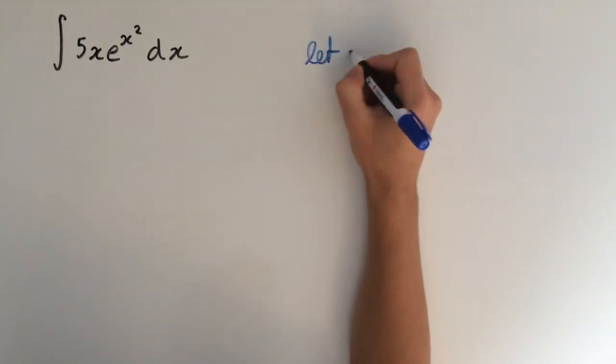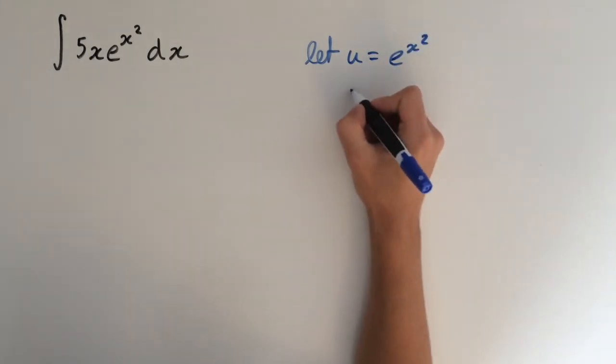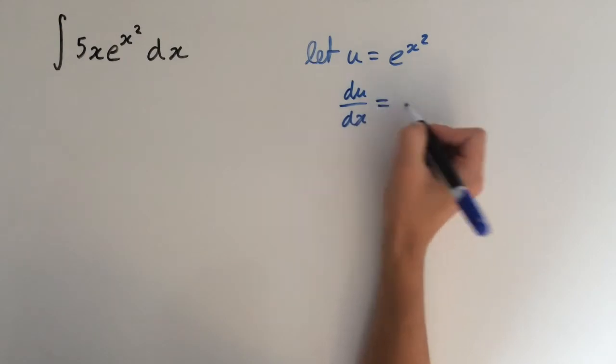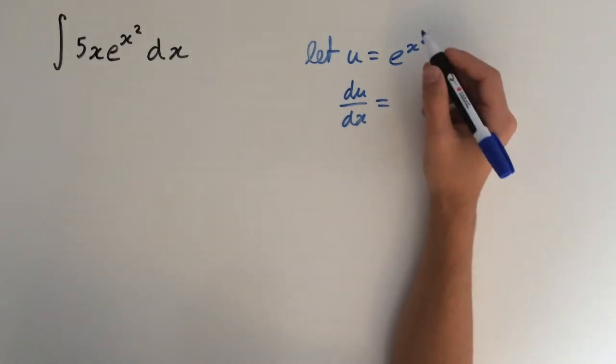So we're going to let u equal e to the x squared. Now we need to differentiate this, so du/dx, and this equals—we need to differentiate it using the chain rule.